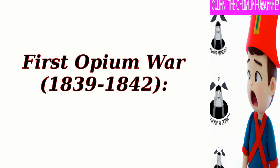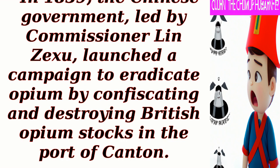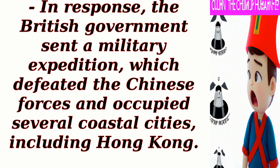First Opium War, 1839–1842. In 1839, the Chinese government, led by Commissioner Lin Zexu, launched a campaign to eradicate opium by confiscating and destroying British opium stocks in the Port of Canton. In response, the British government sent a military expedition, which defeated the Chinese forces and occupied several coastal cities, including Hong Kong.